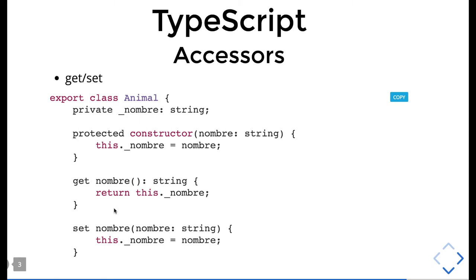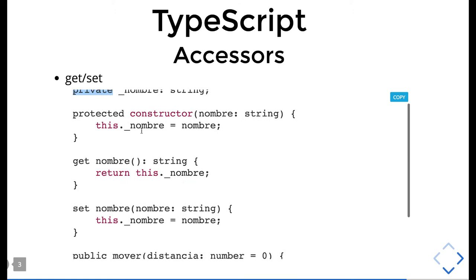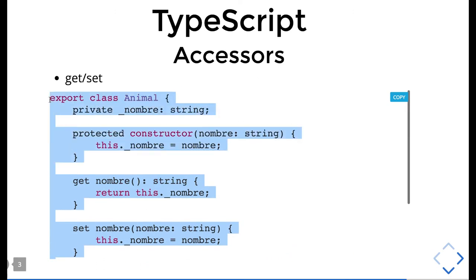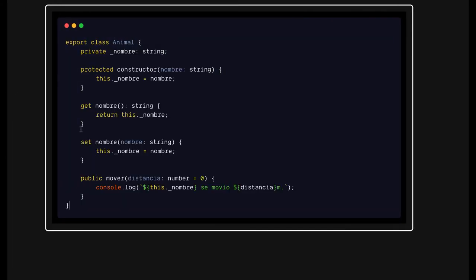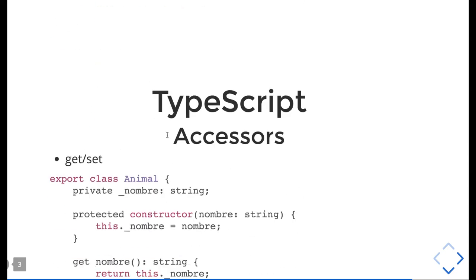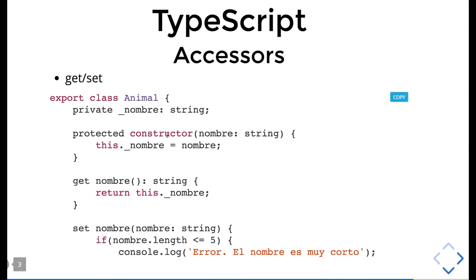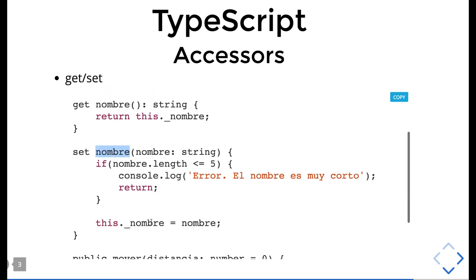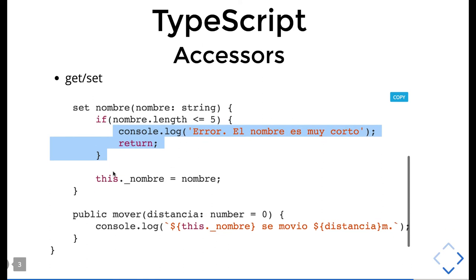Because we have classes, we can get the benefit of them. If we declare a private variable, we have to create getter and setter methods for it — which I have just done. You can create a private variable and a getter that returns a string. Since it's private, you can't access it directly, so you need getter and setter methods. You can also have a setter method to add validations and set values.